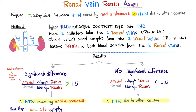When the kidney senses hypotension due to stenosis, it secretes renin into the renal vein. You compare the two values: the affected, stenosed kidney produces excess renin because it perceives low perfusion, while the normal kidney produces normal renin. When the ratio of affected-to-normal kidney renin is greater than 1.5, this confirms that the patient's hypertension is caused by the renal artery stenosis.